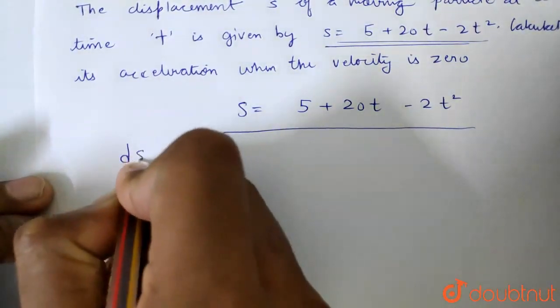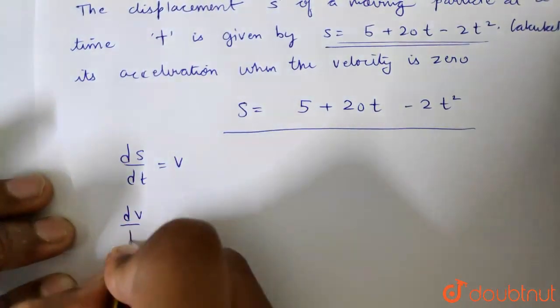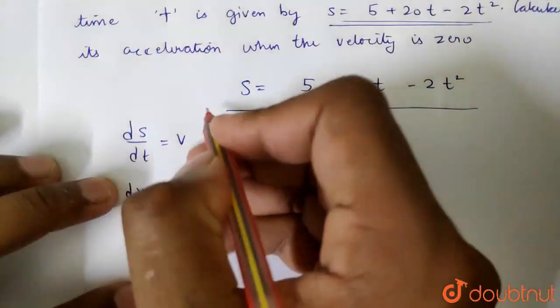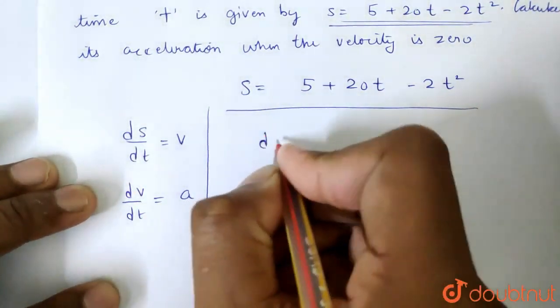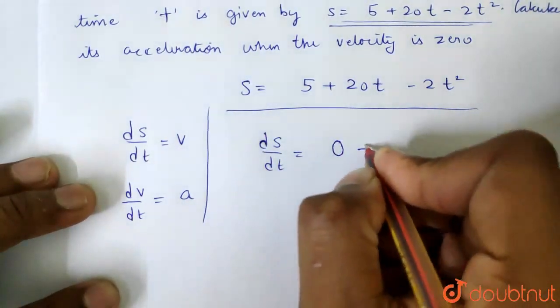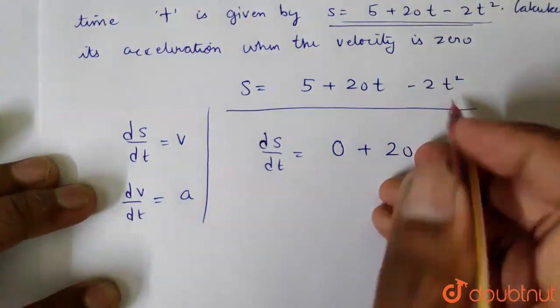We know that ds/dt is velocity and dv/dt is acceleration. So I will differentiate this equation with respect to time. Then ds/dt is equal to - the constant's differentiation is 0 - it is 20 minus 4t. The differentiation of 2t² is 4t.